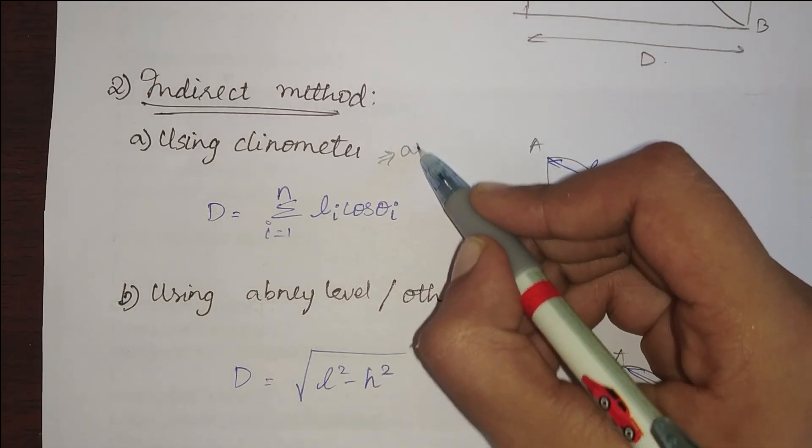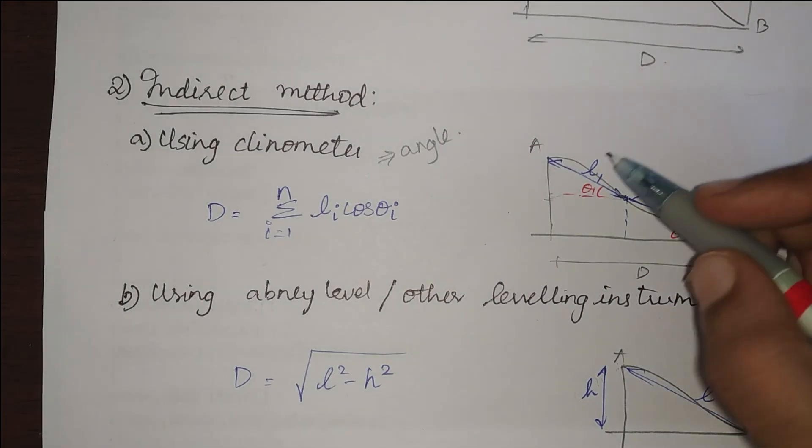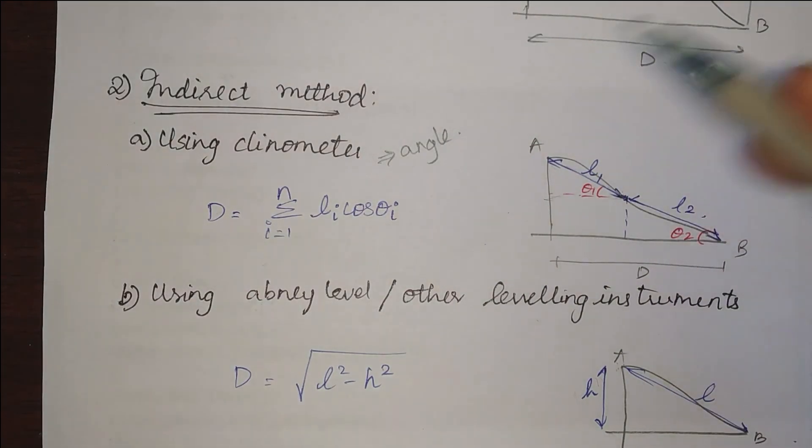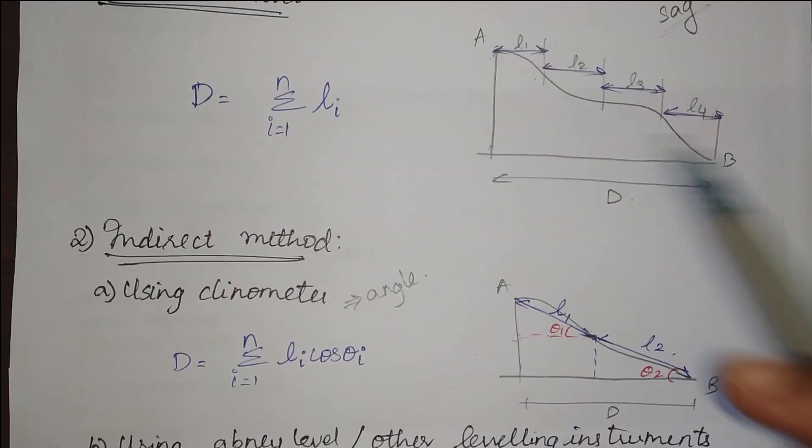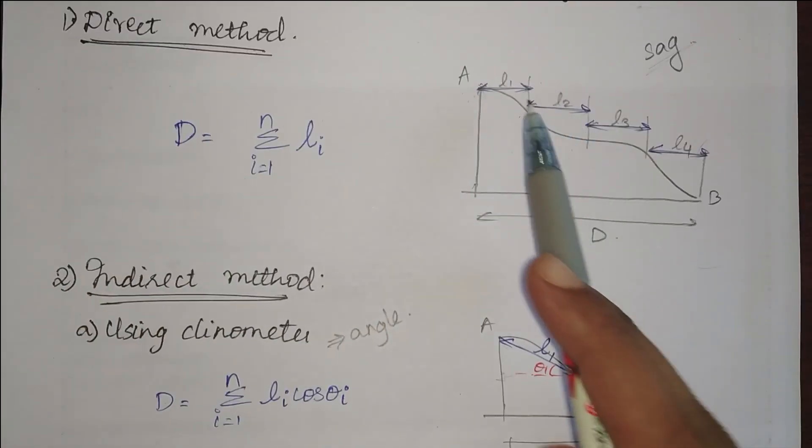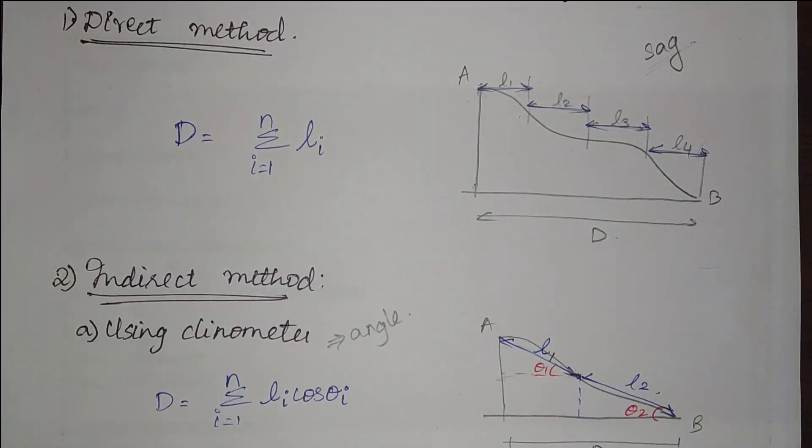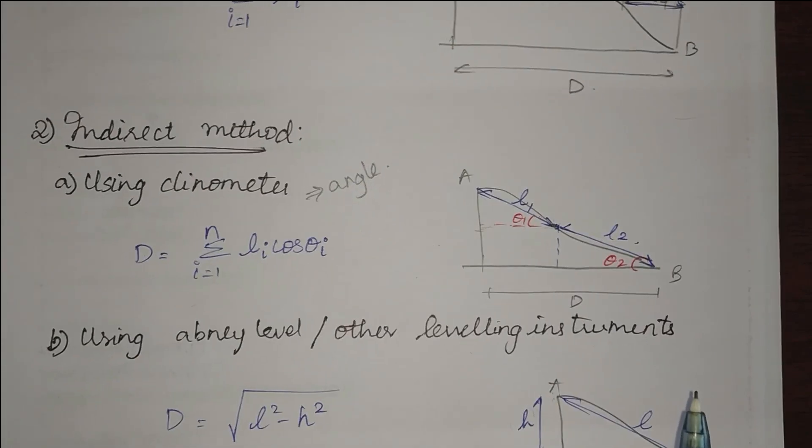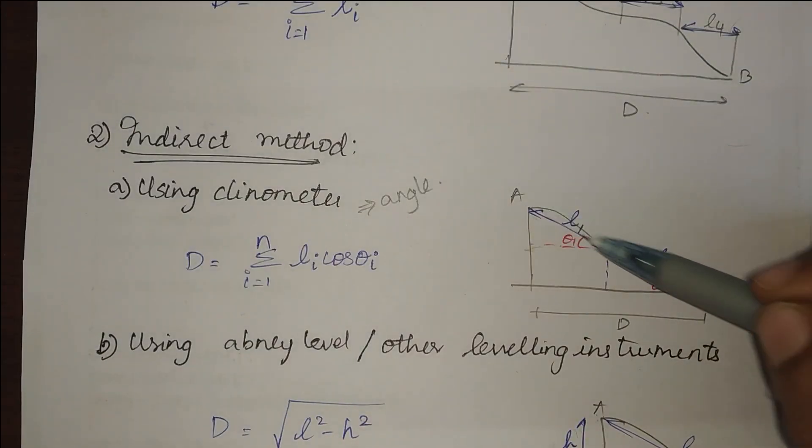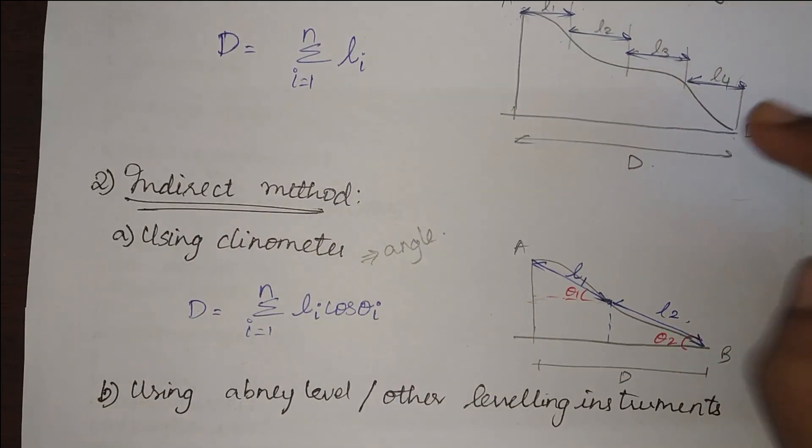In indirect method, unlike direct method where we find the horizontal distance directly, in indirect method we are going to find the sloping distance. This is going to be easier when compared to direct method because sloping distance is easy in field to find.